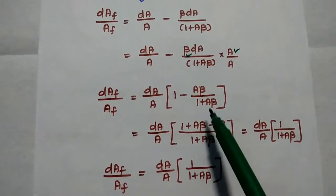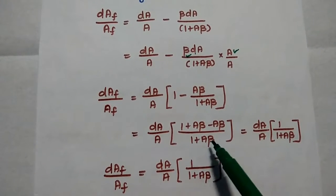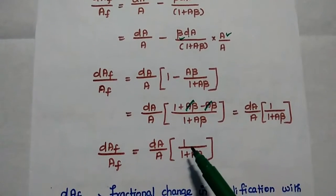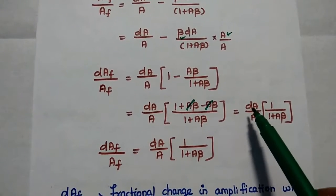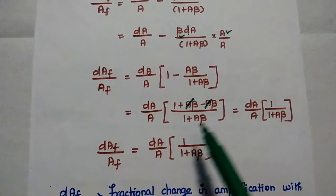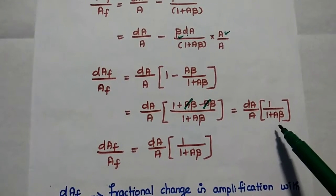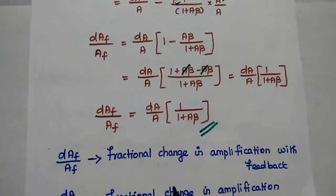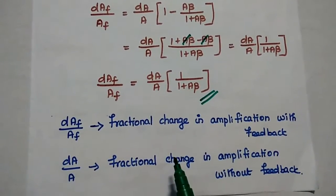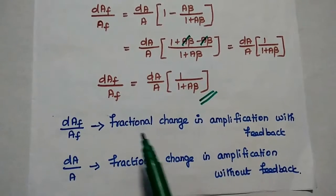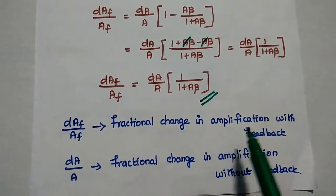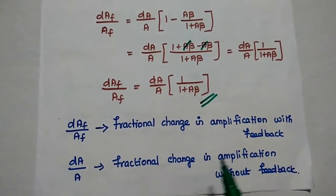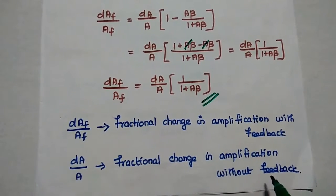Simplifying, (1 plus A·beta minus A·beta) divided by (1 plus A·beta) gives 1 divided by (1 plus A·beta). Therefore, dAf/Af equals dA/A times 1/(1 plus A·beta). Here, dAf/Af is the fractional change in amplification with feedback, and dA/A is the fractional change in amplification without feedback.